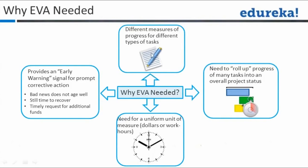Why is EVA needed? There are different measures for different types of tasks, and this allows you to give one single way of measuring everything. It provides an early warning signal for prompt corrective action. As they say, bad news does not age well — meaning if you keep holding on to bad news, it doesn't help.